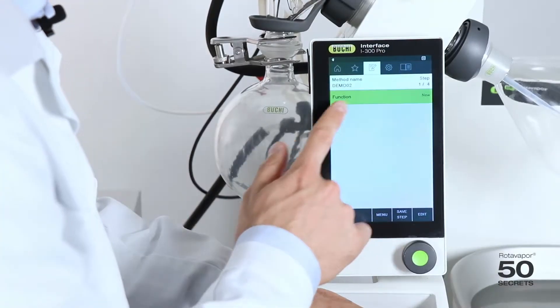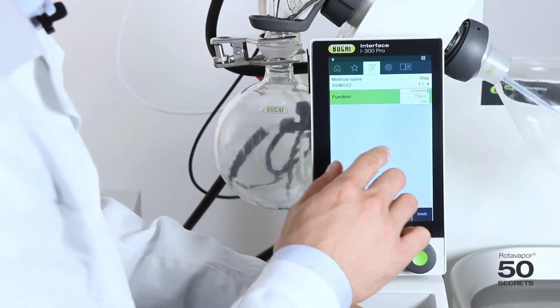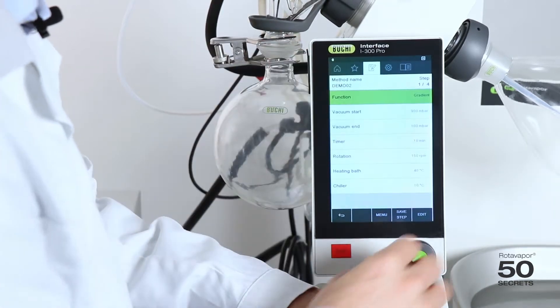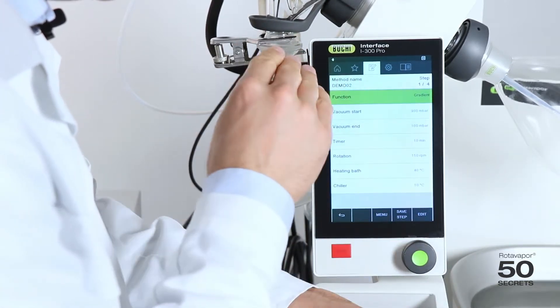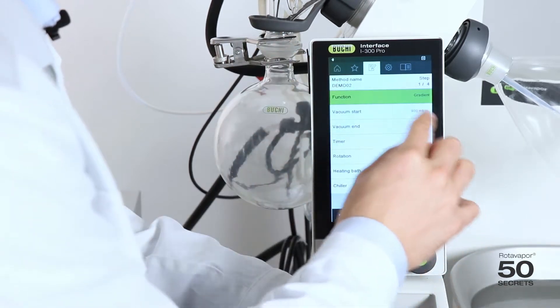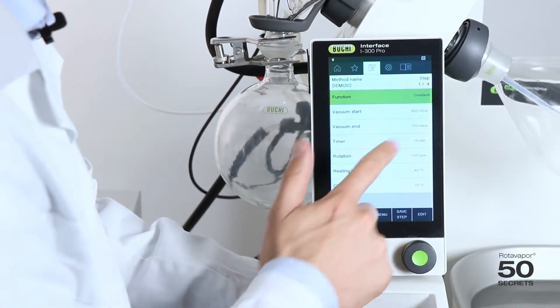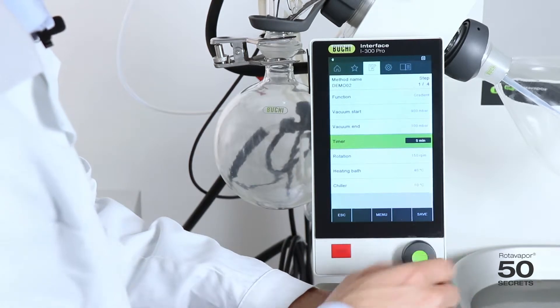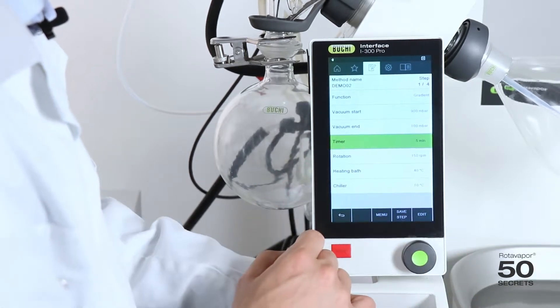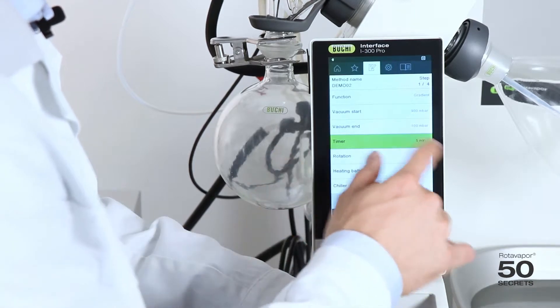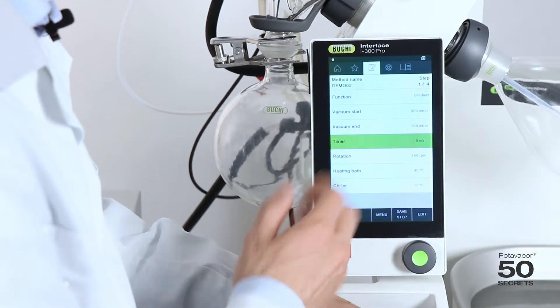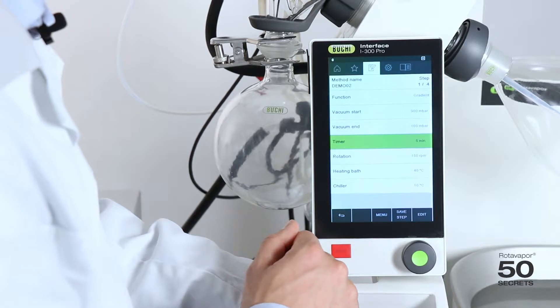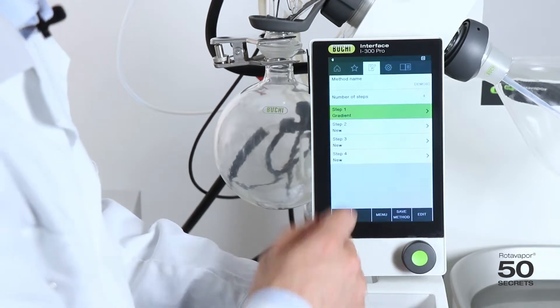The first step would be a so-called gradient. In the gradient we want to start at 900 millibar and then go down gradually to 100 millibar. Let's say this takes five minutes. The rotation speed shall be at 150 RPM. The heating bath temperature at 40 degrees. Save the step.